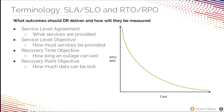Recovery time objective, also known as RTO — the maximum acceptable length of time that your application can be offline. Should a service interruption happen, it is the time taken to recover the service. Recovery point objective, also known as RPO — the maximum acceptable length of time during which data might be lost due to a major incident. Your RPO and RTO are the key drivers for your DR planning.